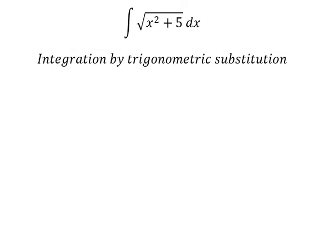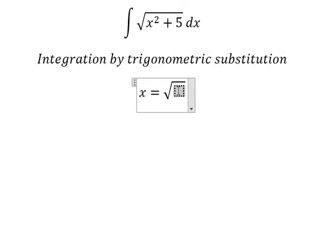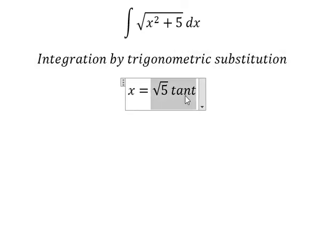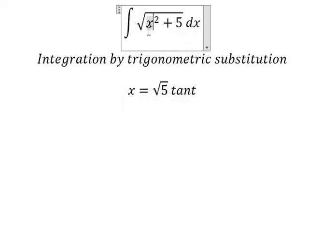I will put s equals to the square root of 5 times tan(t). Because if I substitute this in, we have 5 tan²(t) plus 5. We can do factorization: 5 times (tan²(t) plus 1). Then we simplify the square root.